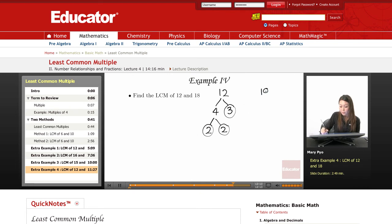And then do the same thing for 18. So for 18, I can use 9 and 2, or I can use 6 and 3. This is a prime number, I circle that one. For 6, I'm going to use 2 and 3. I circle them because they're prime.